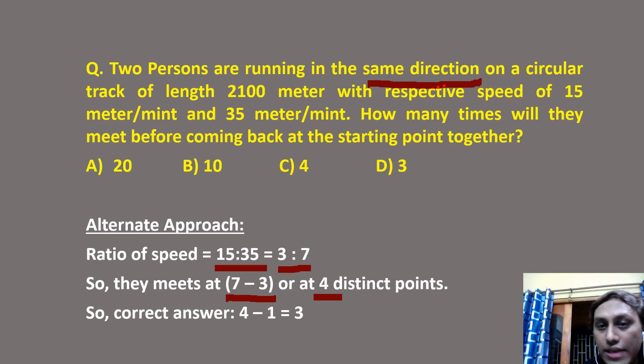And remember, this includes the starting point. But our question is saying how many times they must meet before coming back to the starting point. That means we have to exclude that starting point. So final answer must be 4 minus 1, 3. Option D.